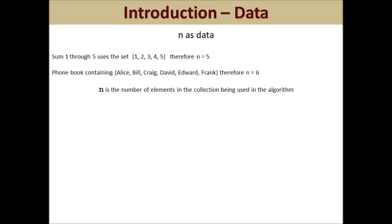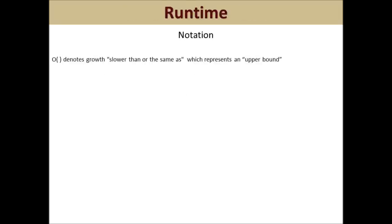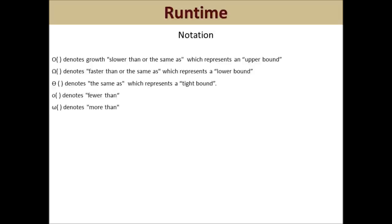Now that the introduction is over, let's start looking at algorithm runtime. We will use the notation big O, big omega, and big theta. Big theta denotes 'the same as,' representing a tight bound. Big O denotes 'growth slower than or the same as,' representing an upper bound. Big omega denotes 'faster than or the same as,' representing a lower bound. Little o denotes 'fewer than' and little omega denotes 'more than.' In this video, we will cover big theta and big O. Let's now start putting together growth rates and atomic operations to understand runtime.